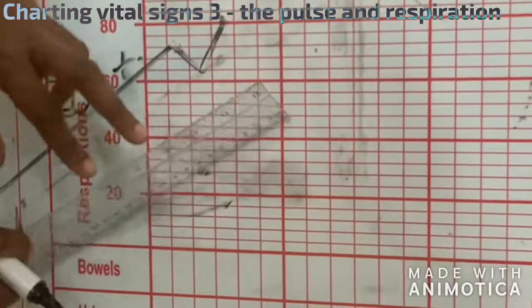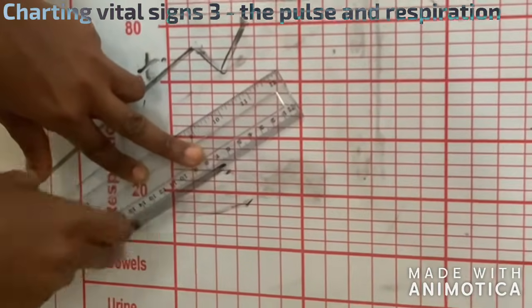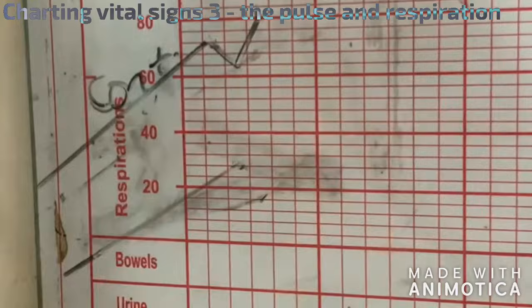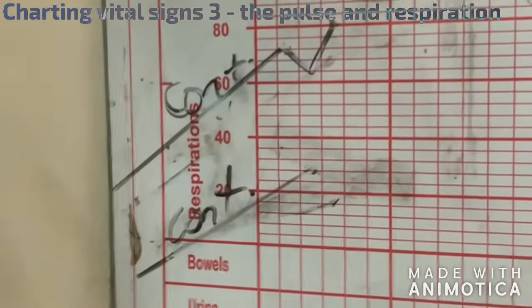And then, if it's a fresh sheet, you have to always make this line and write continued or on admission if it's a new patient.